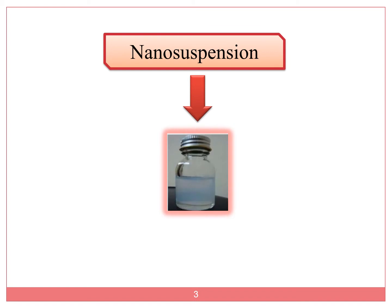Then why go for Nanosuspension? Most pharmaceutical ingredients or APIs do not reach the market due to lack of solubility and permeability. To enhance solubility, it is important to reduce particle size to a smaller range, and hence Nanosuspension technology is used. Nanosuspension increases the surface area of the particles by reducing particle size.